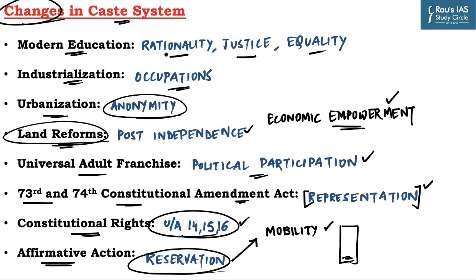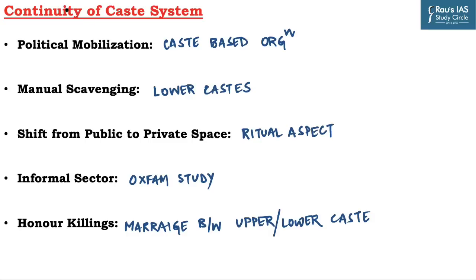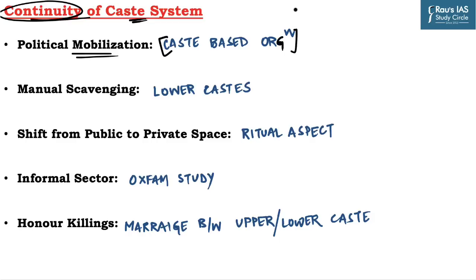Despite these developments, caste continues to play a significant role in Indian society. Now, why does this continuity of caste system exist? The first reason is political mobilization — many caste-based organizations work towards mobilization of people and render caste-based identity relevant for Indian society. One such organization is Bahujan Samaj Party of Uttar Pradesh.